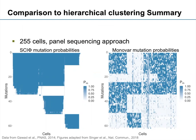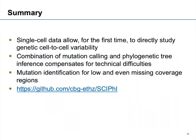In summary, for the first time we can measure single-cell DNA and use it to call mutations. Using the phylogenetic structure in cancer and tumor datasets, we are able to overcome problems caused by technical issues. We are even able to call mutations in settings where we don't have any reads supporting the hypothesis that there is a mutation. You can find our approach on our GitHub page. Thank you again, and I'm happy to take questions.